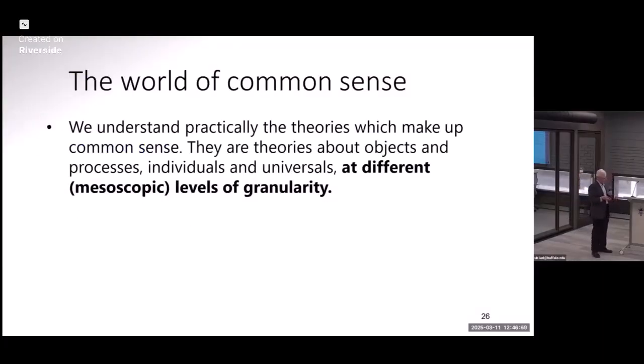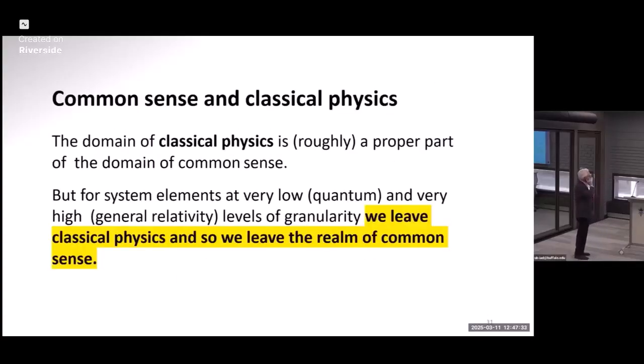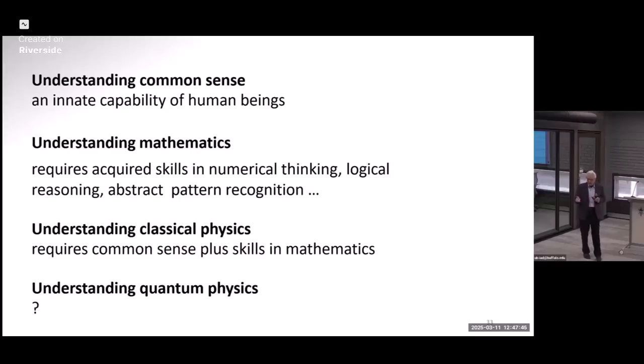The world of common sense includes big objects like this machine, which works really well, and people and chairs and planets and so forth. But it doesn't include very big objects. It doesn't include very small objects, objects at the level of quantum phenomena, objects at the level of general relativity theory. I'm just going to talk about quantum phenomena. In classical physics, you can do experiments in ordinary everyday reality. But we occasionally create special experimental setups. We do experiments in vacuum, for instance. That's still part of common sense, still part of classical physics. When we move to the quantum realm, we leave classical physics and we leave the realm of common sense.